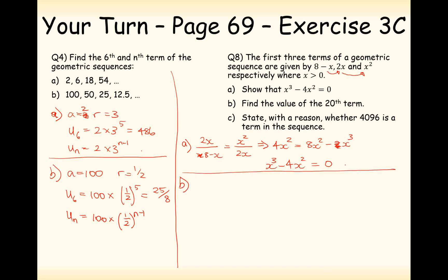Part b: find the 20th term. We need to work out what x is — it can't be 0, so the only other solution is x equals 4. With x equal to 4, the common ratio is 8 divided by 4, which gives 2. The starting term is x minus 8, so 8 minus 4 equals 4. Now we can work out the 20th term: U20 equals 4 times 2 to the power of 19 — always 1 less than the term we're at — which equals 2,097,152.